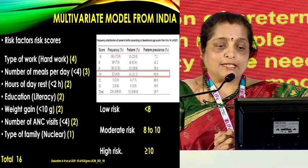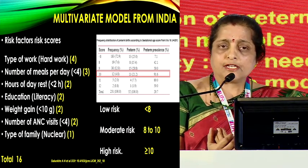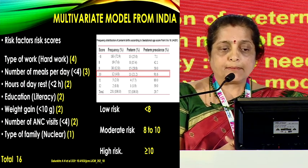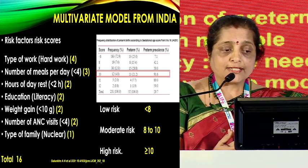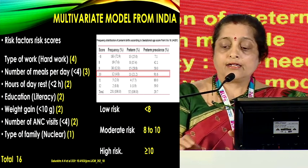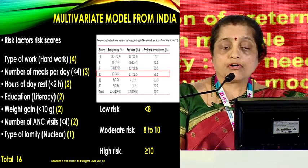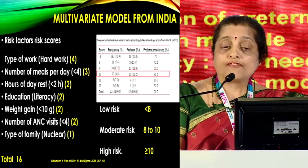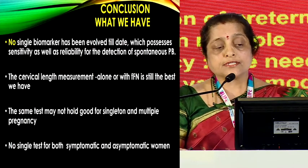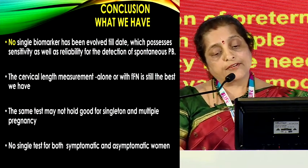Recently, a multivariate model was published from India. What is different about this study is that the parameters taken are applicable to the population being served. They included type of work, number of meals a person gets, hours of daytime rest, education, weight gain, number of antenatal visits, and type of family — each given different values. It correlated beautifully with prediction of preterm birth, and a risk score of 10 gave a predictive value of 91.6%.